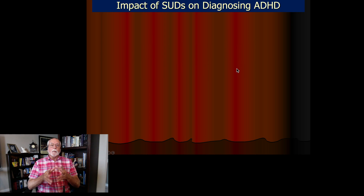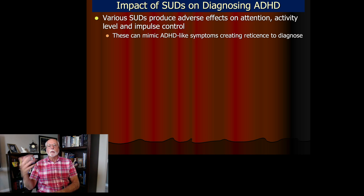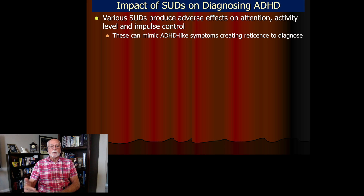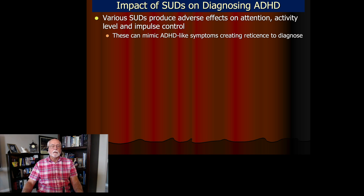The impact of a substance use disorder on diagnosing ADHD has been pretty controversial in clinical practice. We know that various substances can have adverse effects on anyone's attention, distractibility, activity level, and impulse control — so that the abuse of certain substances like cocaine, amphetamine, and methamphetamine can produce symptoms that mimic ADHD-like symptoms as a result of excessive use. This has led some clinicians to be very reticent about diagnosing ADHD in the presence of a substance use disorder.